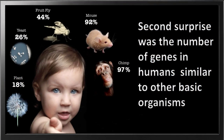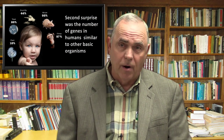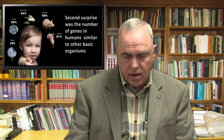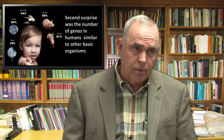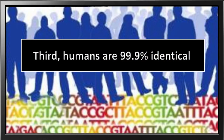The second surprise was the number of human genes similar to other basic organisms — a lot of gene structures and base pairs lined up very similarly to other organisms, which was surprising. The third point — not so much an argument for evolution but a surprise — is that 99.9% of us are identical as far as our genes go. Even though we don't look alike, we're all 99.9% identical, and that's for all races.